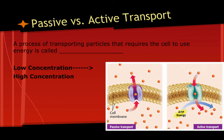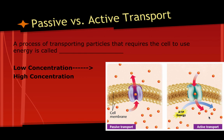A process of transporting particles that requires the cell to use energy is called active transport. With passive transport, particles are concentrated on one side and simply pass through a channel protein to lower concentration. With active transport, we are moving something from low concentration to high concentration — which goes against everything else we've learned. The difference is ATP, or energy. Active transport can only happen if energy is added, enough to open one of these proteins and allow movement from low concentration to high concentration.